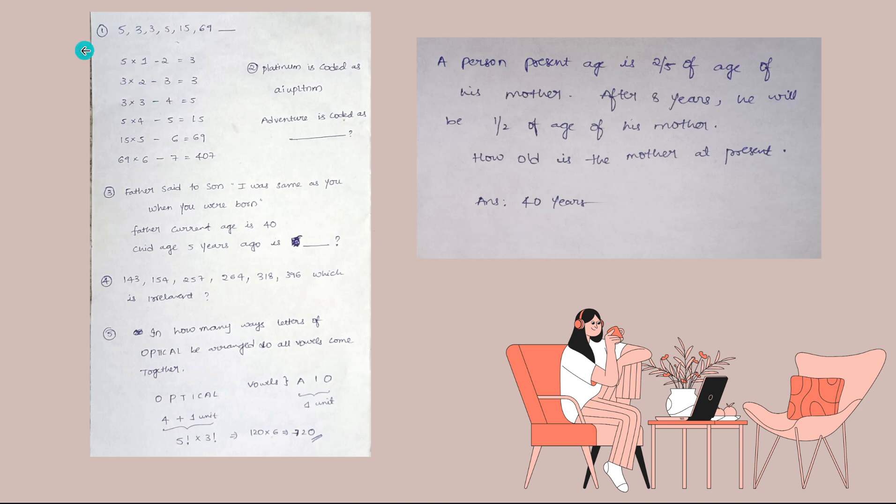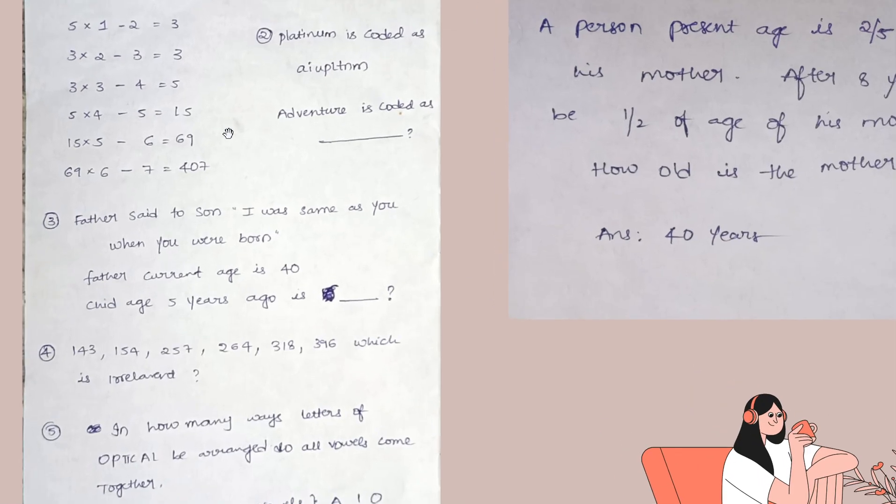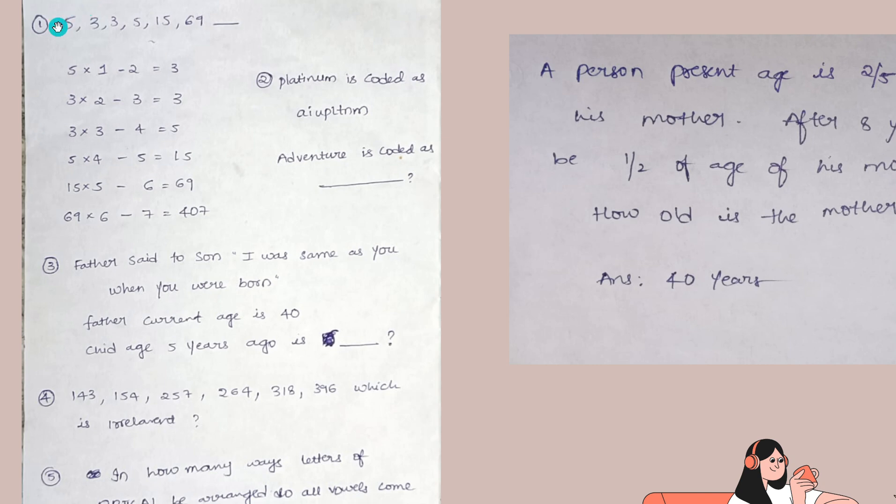See, this is the question: 5, 3, 3, 5, 15, 69. You have to find the following term. This is the logic: 5 × 1 - 2 gives 3, then 3 × 2 - 3 gives 3, and so on. Following the pattern, you will get 407 as the next term in this series. Have a look at this logic - I hope it is visible for everyone.